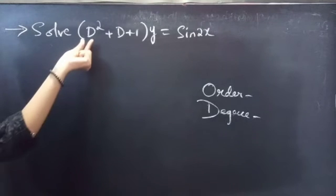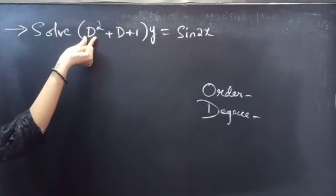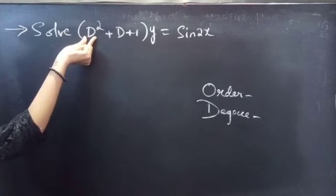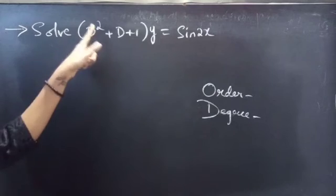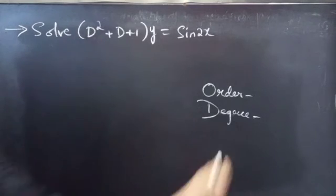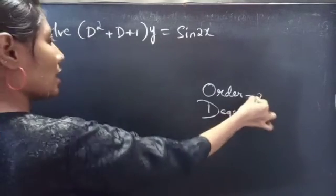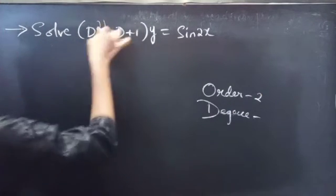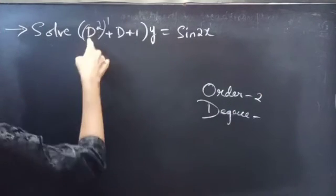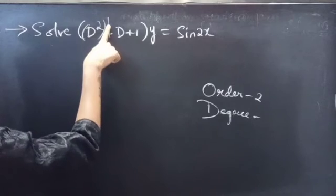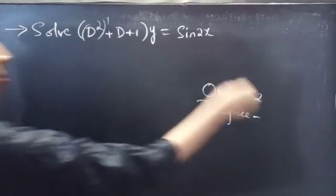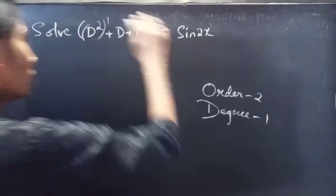Identify the highest derivative in the differential equation. Here we have D² as the highest derivative, so our order will be 2. And the highest power of the highest derivative is our degree — degree is 1.